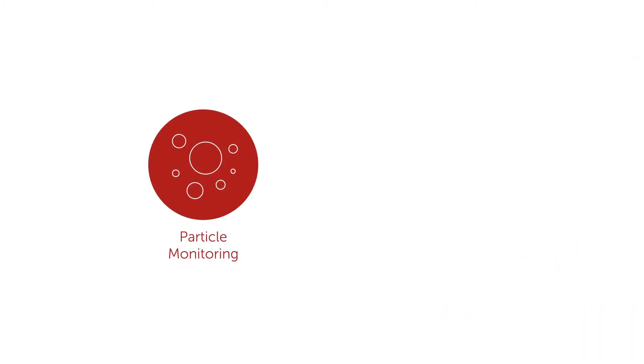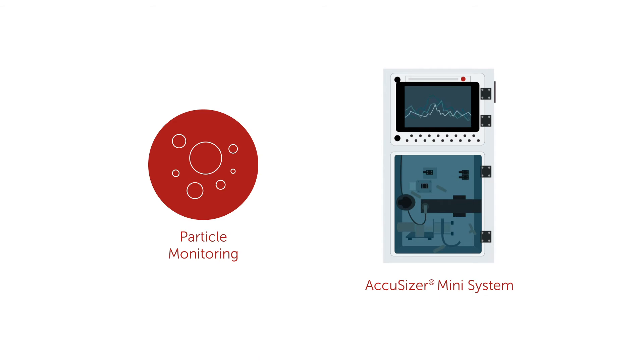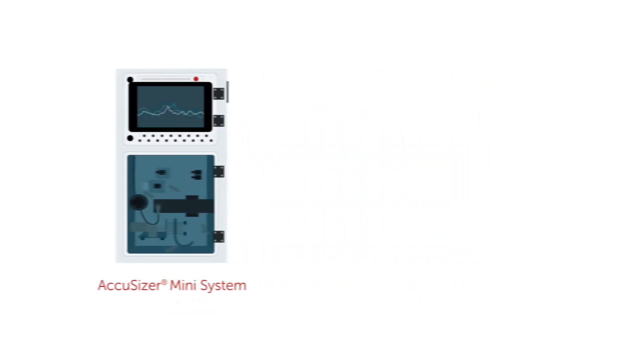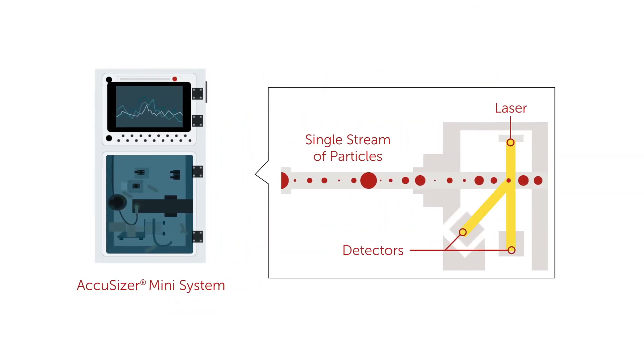Next, large particle count in the slurry is monitored using the AccuSizer Mini system. Slurry particles must be constrained to a defined distribution to prevent damaging wafers during CMP. Using the AccuSizer Mini system to continuously analyze samples, large particles can be detected before they cause harm.